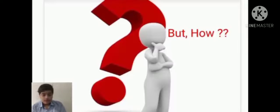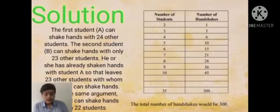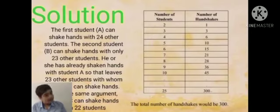But how? Let's find the solution to this answer. The first student can shake hands with 24 other students. The second student can shake hands with only 23 students, as he or she has already shaken hands with student one.